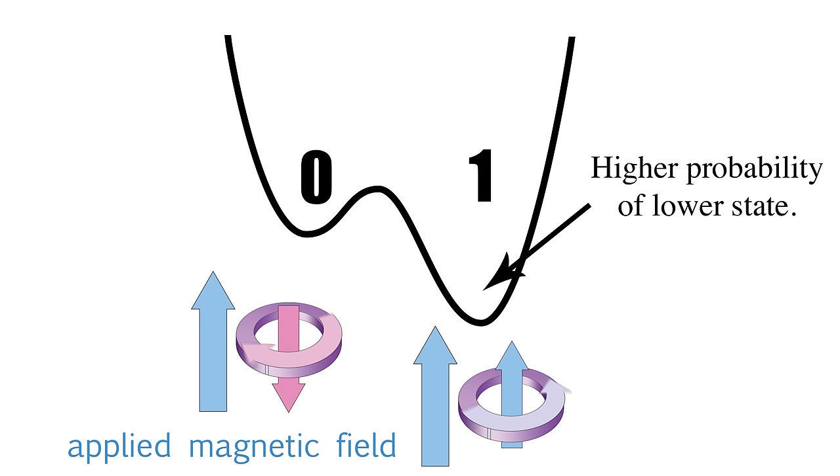This external magnetic field is called a bias and the qubit is basically minimizing its energy in the presence of this external magnetic field.